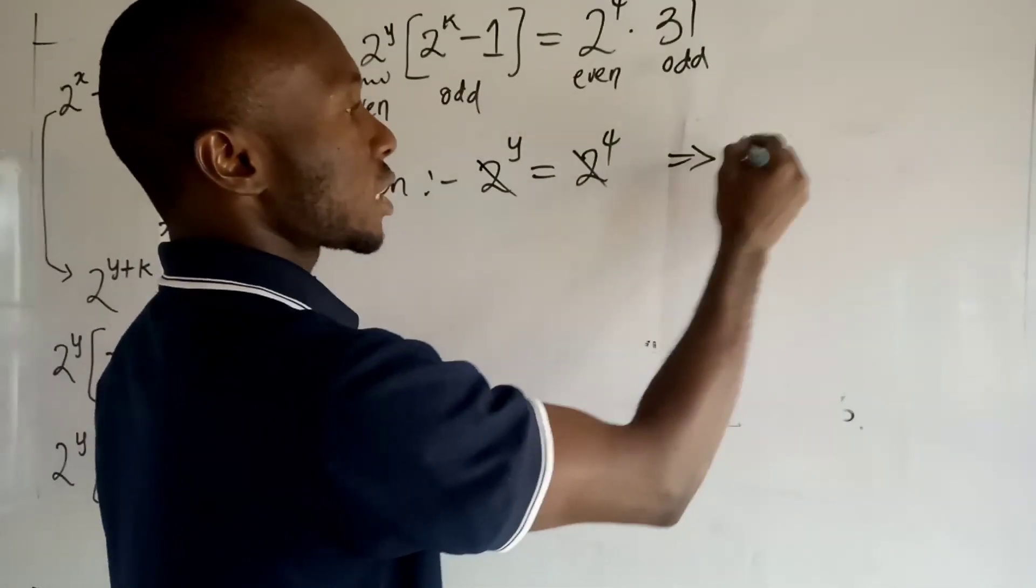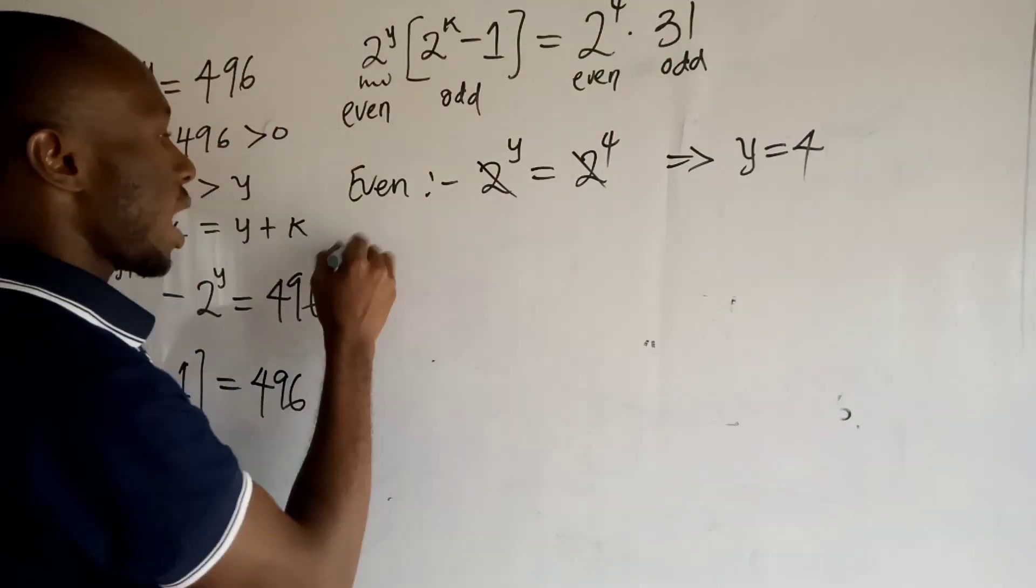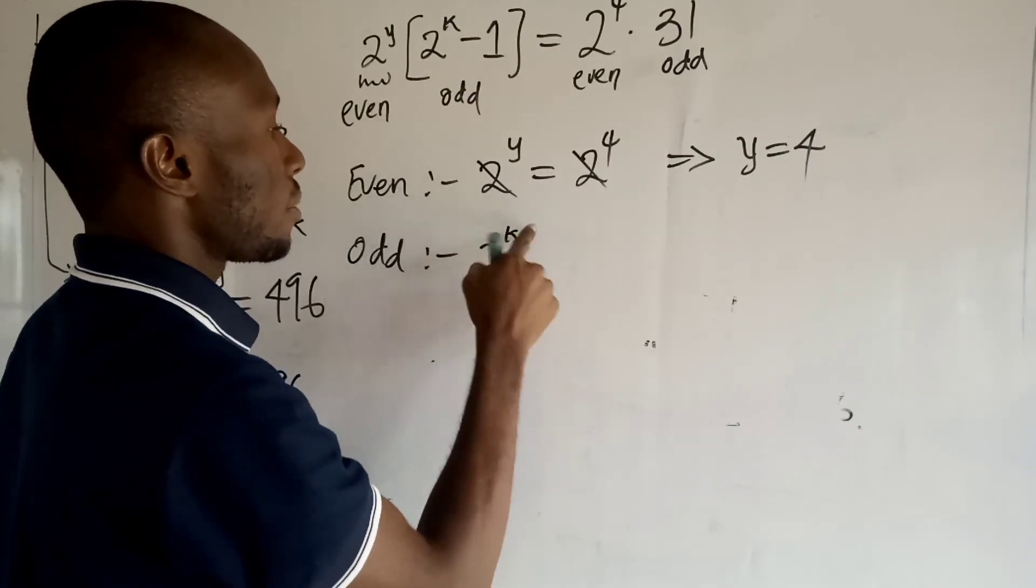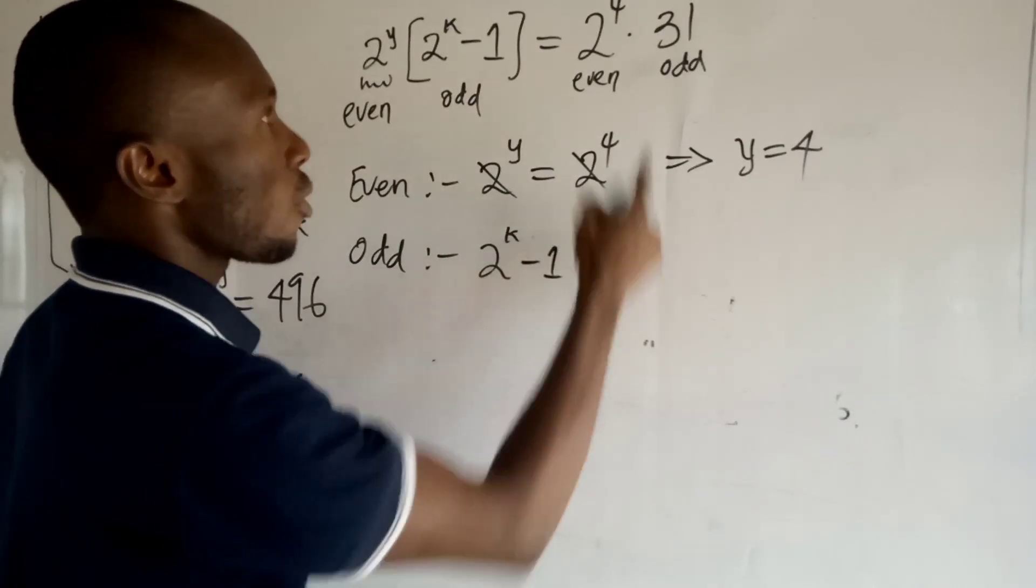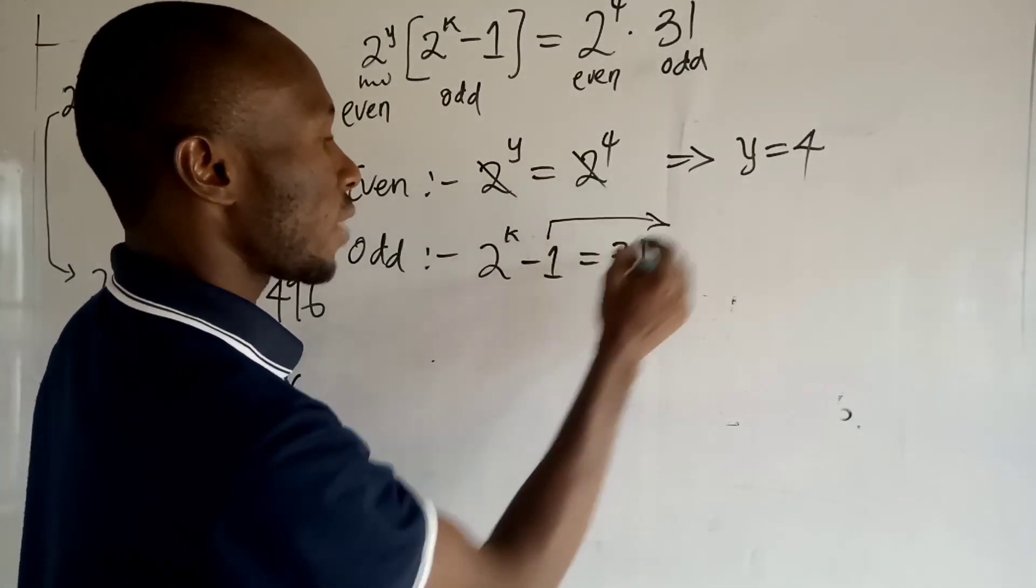Now let us go back to the odd terms. So I have the odd terms: 2 to the power k minus 1 is equal to the odd term here, which is 31.